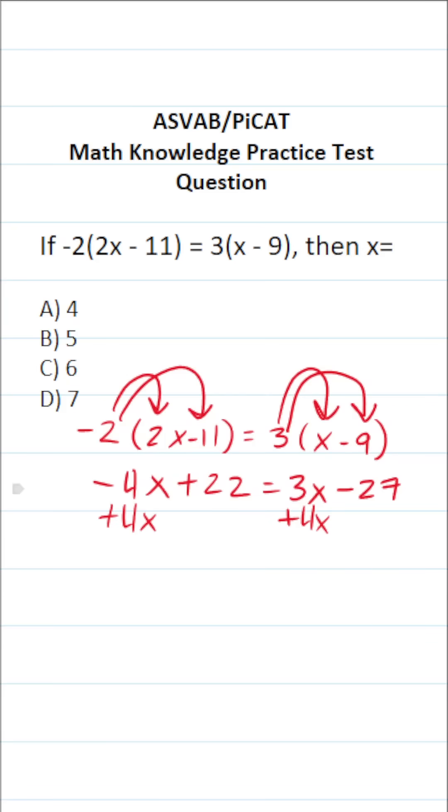And at the same time, I want to get this negative 27 to the other side of the equation via addition. Negative 4x plus 4x is 0, so this goes away. 22 plus 27, 2 and 7 is 9, 2 and 2 is 4.